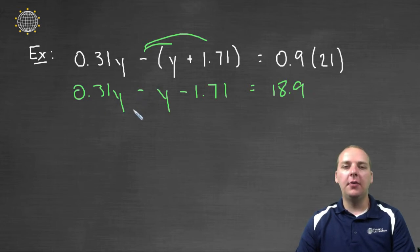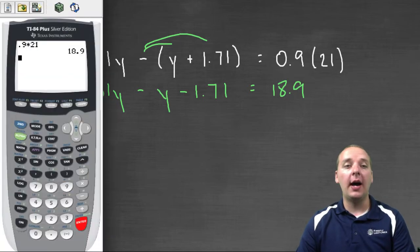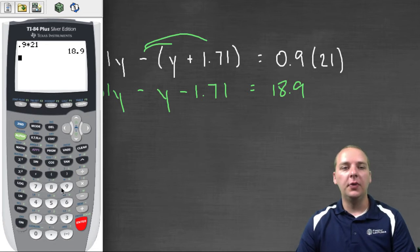On the left hand side, I still have a little bit to clean up. I have 0.31y - y, those are like terms. So I can just add or subtract the coefficients, and I can do that in the calculator. I actually don't need to type in the y's, I'm really just adding and subtracting the coefficients. So I have 0.31, and we'll just understand that there's that many y's that we have first, minus 1y, this coming second.